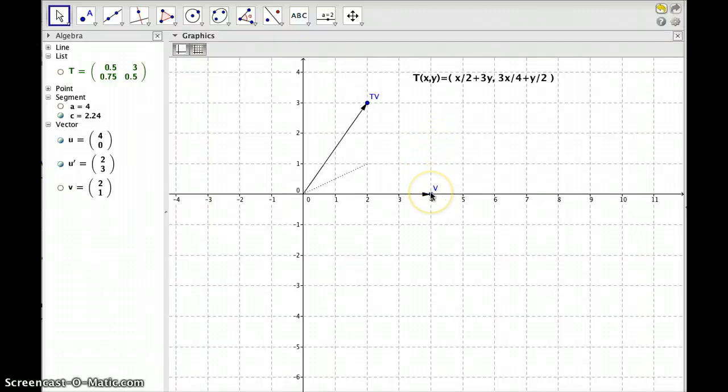Okay, here we have an example of a linear transformation. I have this transformation right here, t of x, y is equal to x over 2 plus 3y, comma, 3x over 4 plus y over 2.